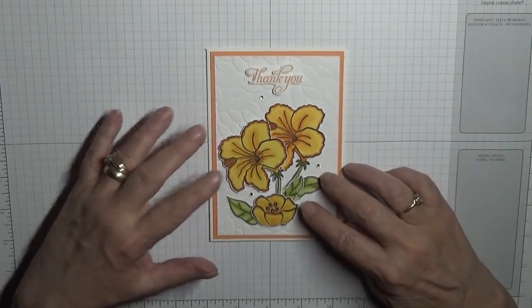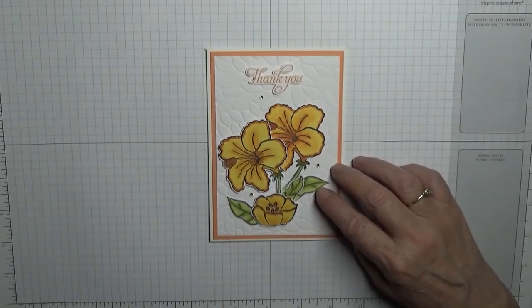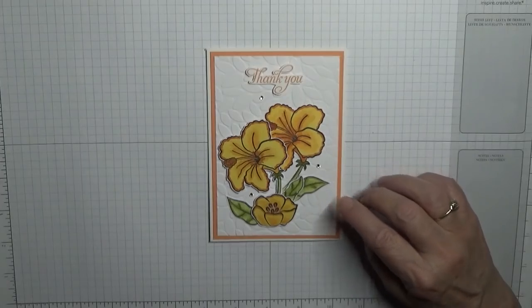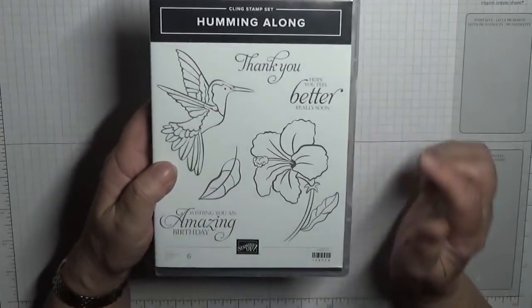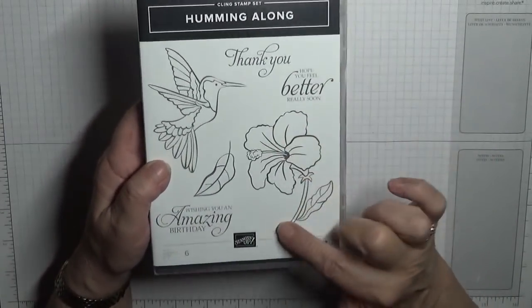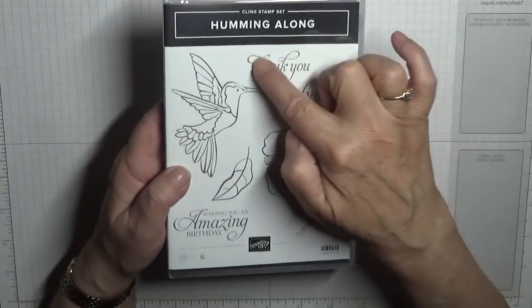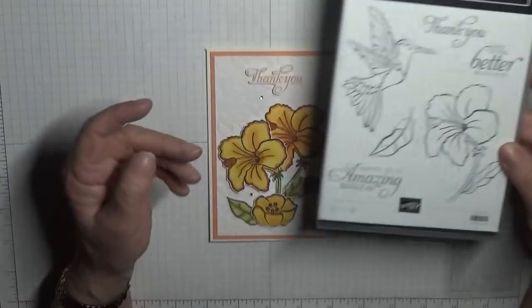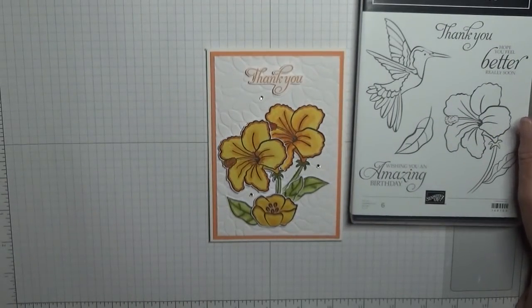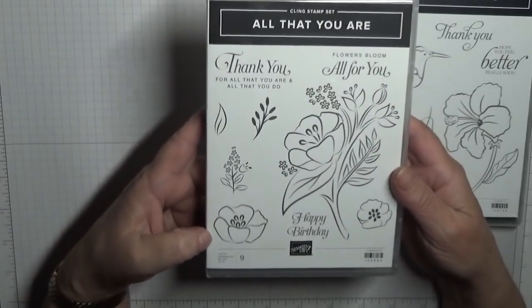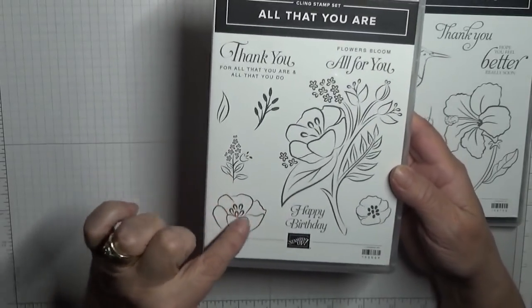The stamp sets I use, that's right there's two stamp sets in this, two brand new ones. The first one is Humming Along and I'm going to use that flower and the leaf and the word thank you, and for the little flower I'm using All That You Are cling stamp and we're just going to use that one.